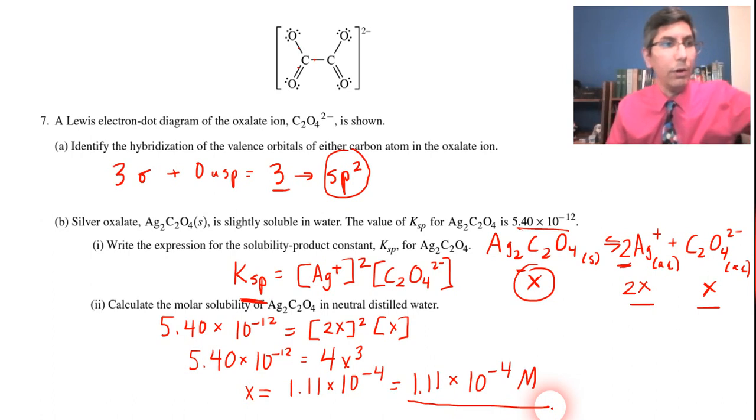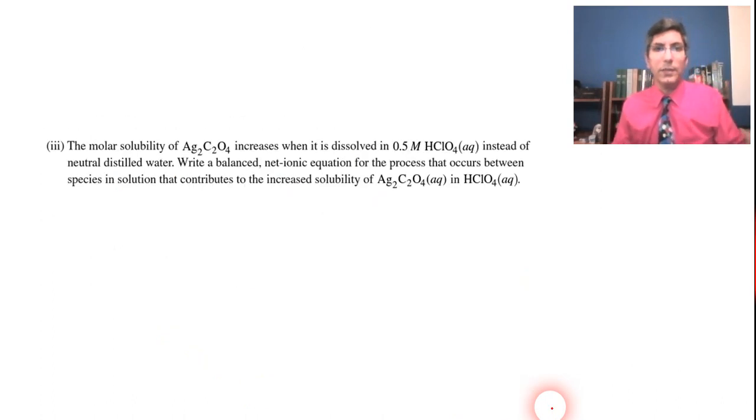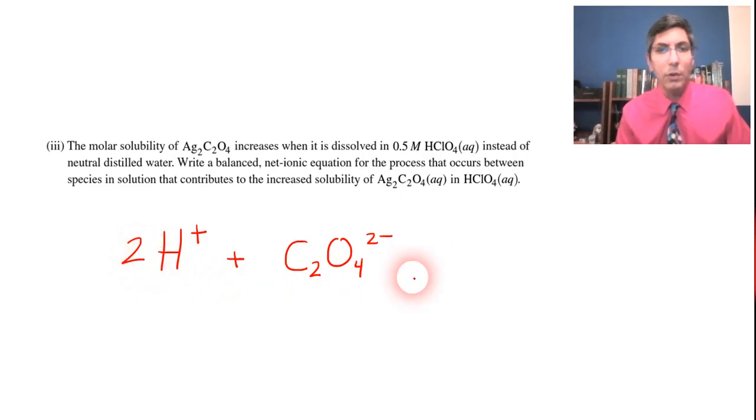So now we can go on to part three. And this is an interesting question, because it says that the molar solubility of silver oxalate increases when it's dissolved in 0.5 molar perchloric acid instead of neutral distilled water. Write the balanced net ionic equation for the process that occurs in solution that causes this increased solubility. Well, we have to remember that perchloric acid is a strong acid. And anytime you have strong acid added to anything, it means you have a bunch of H+ ions swimming around in solution. And the hydrogen ions, these H+ ions, are going to react with some of the oxalate ions that are also swimming around in solution.